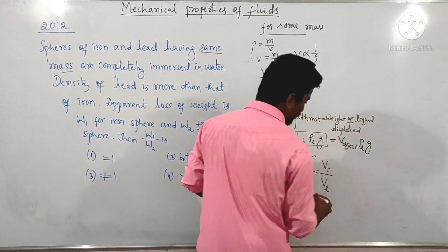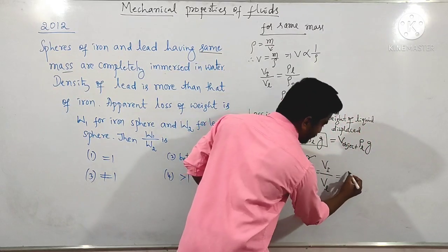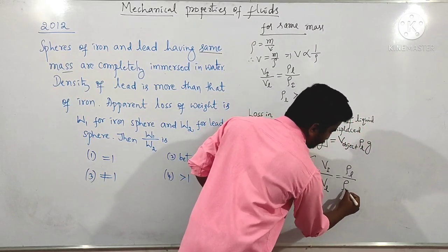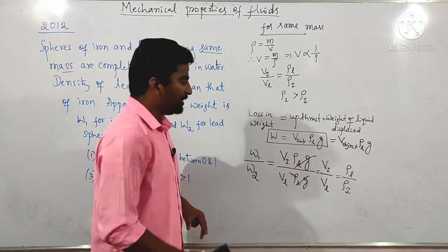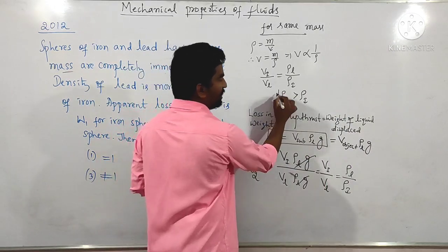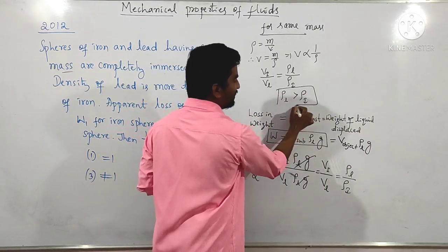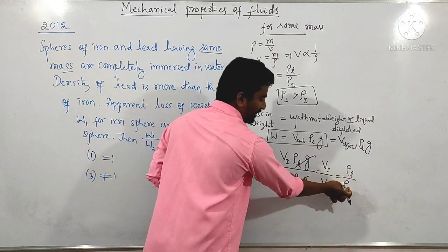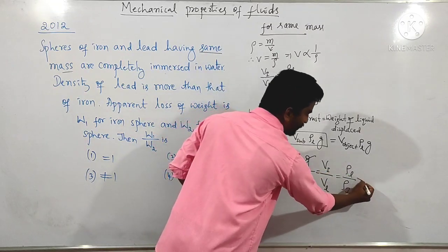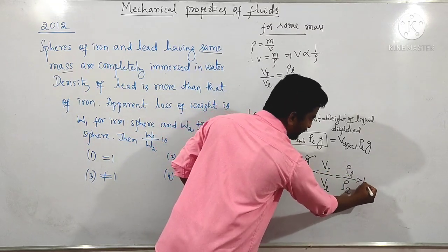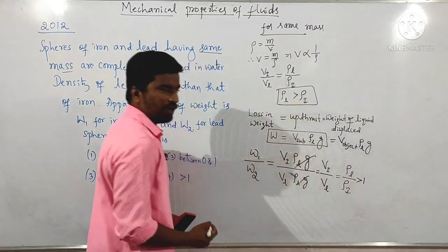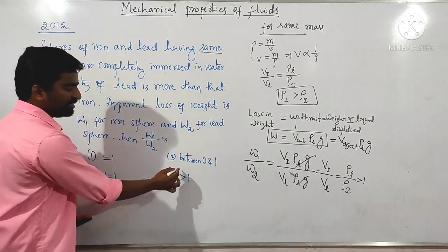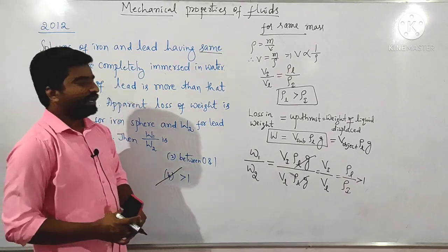If you substitute here, the ratio becomes density of lead to density of iron. The condition given is that density of lead is greater than density of iron. So the answer for the given question is greater than 1.